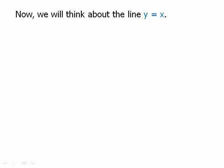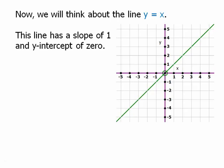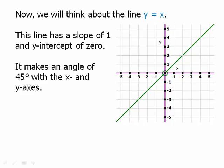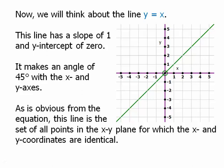Now a little harder — we'll think about the line y = x. This line has a slope of 1 and a y-intercept of 0; it's a very special line. It makes an angle of 45 degrees with the x and y-axes. As is obvious from the equation, this line is the set of all points in the xy-plane for which the x and y-coordinates are identical. All the points above this line have a y-coordinate bigger than the x-coordinate; all the points below the line have an x-coordinate bigger than the y-coordinate.